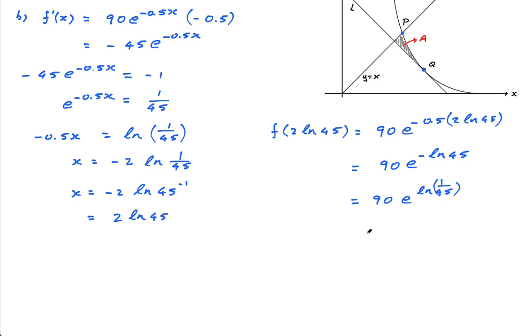And then, because e to the ln of x equals x, this is just 90 times 1 over 45, which is equal to 2.